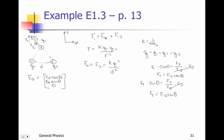Look at my coordinate system — x to the right is the positive direction. But if I look at my f sub x, this component is in the negative direction, so that tells me I have a negative component here. And if I look at the y, my y is pointing up, it's in the positive y direction, so this is positive. So that would be my f1,3.